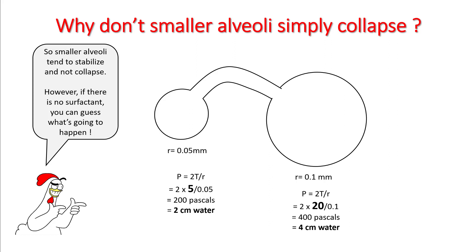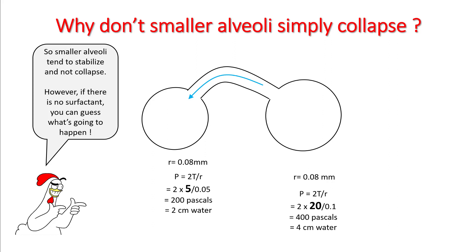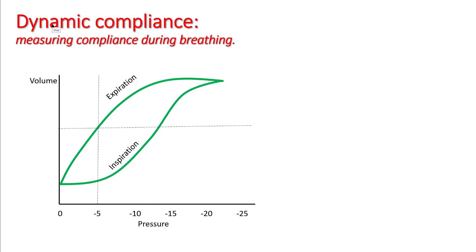There is also redistribution of gases due to alveoli with different time constants, and some absorption of gas, all contributing to the hysteresis loop. Because of this property, more pressure is required during inflation than deflation, and the area between the two curves represents energy lost during the breath. Smaller alveoli do not collapse because the reduced surface tension from clustering surfactants lowers their internal pressure, so air moves from larger to smaller alveoli until pressure equilibrates.